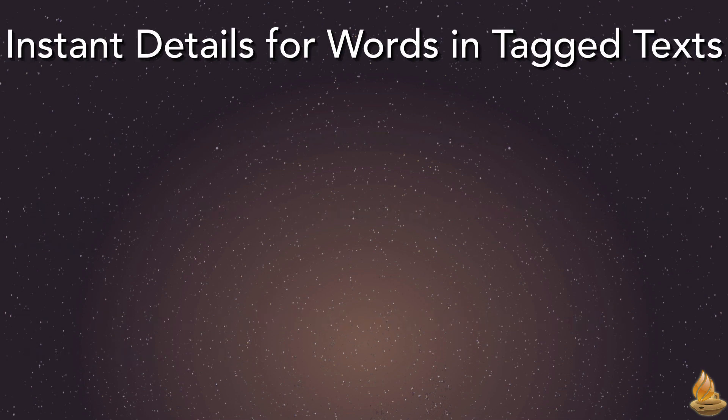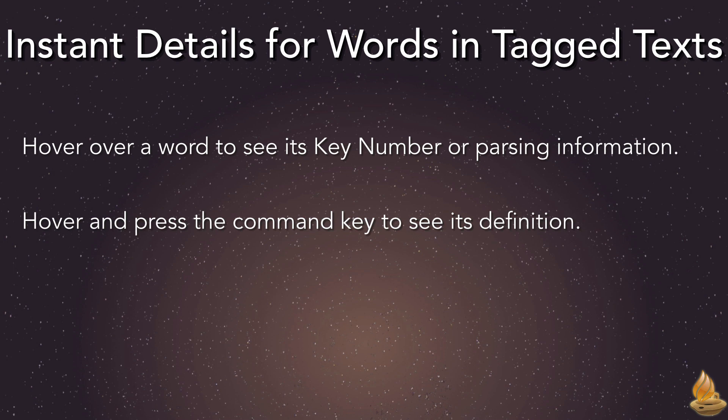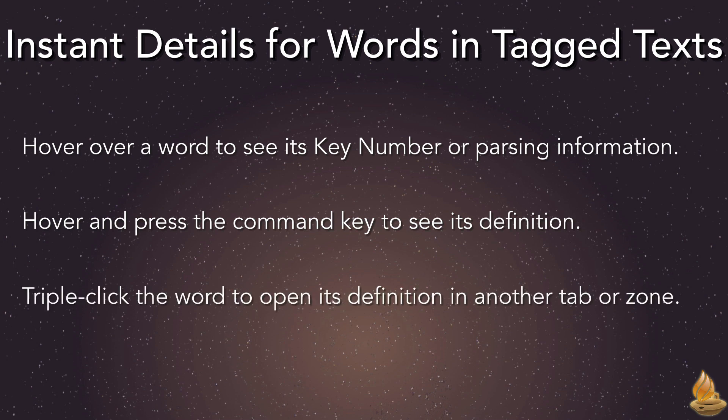In Tagged Text, Instant Details also lets us investigate individual words rapidly. For instance, we can hover over a word to see its key number or parsing information. We can hover and press the command key to see its definition, or triple-click the word to open its definition in another tab or zone. Let's take a look at these features in action.